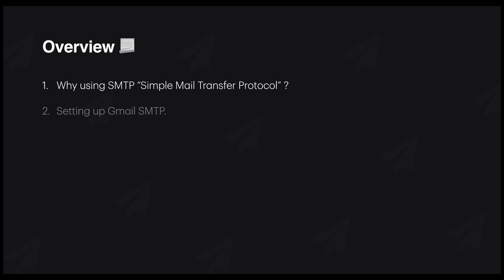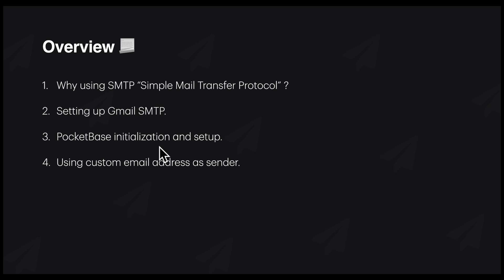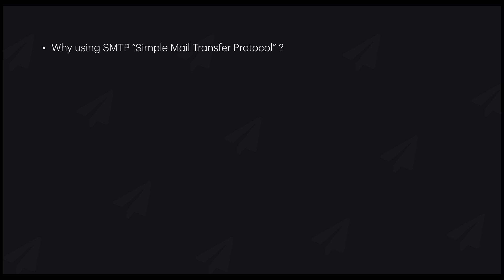Then we're going to set up our Gmail SMTP, initialize PocketBase and set up the backend server in Replit. After that, we're going to use a custom email address as a sender — so instead of gmail.com, we'll use our custom domain from any provider. We'll cover Hostinger, and the last step will be sending emails with custom logic.